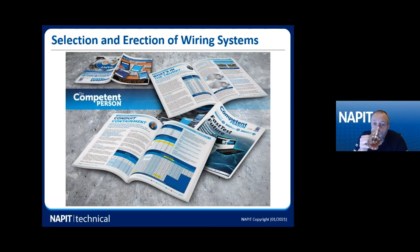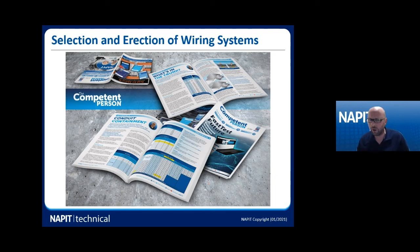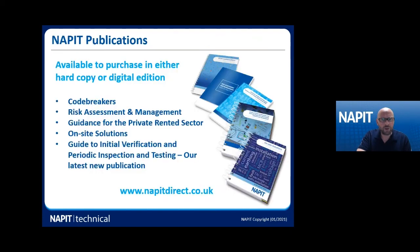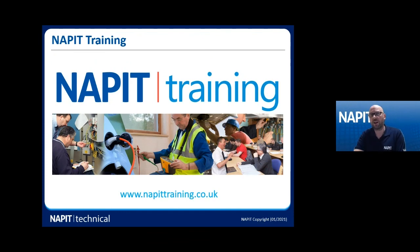There are some articles with further information in the Competent Persons magazine — over the last two or three editions we've covered conduit and trunking, and there's also a ladder rack article where advice on bonding is included. We have a suite of documents covering a lot of this information — the On-Site Solutions guides cover premature collapse and wiring systems in length, and there's a new guide on testing and inspection. Please have a look at those on NAPE Direct, and also check out our training offerings if you need further guidance.